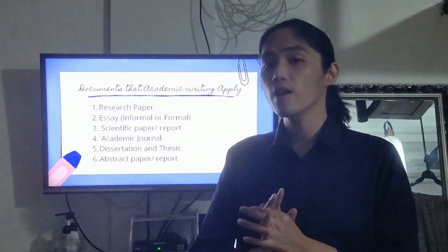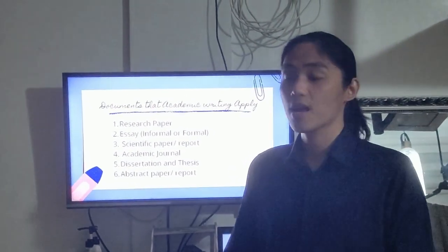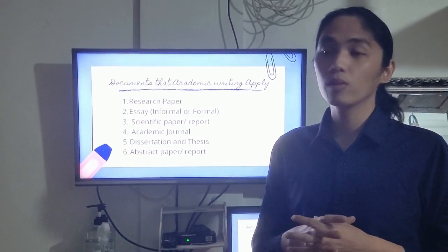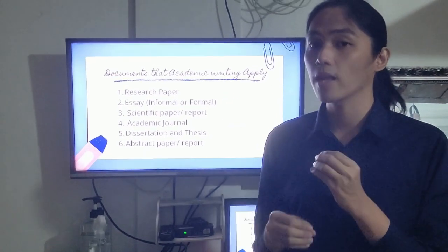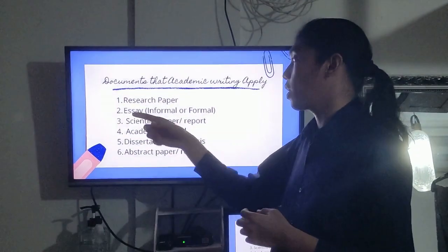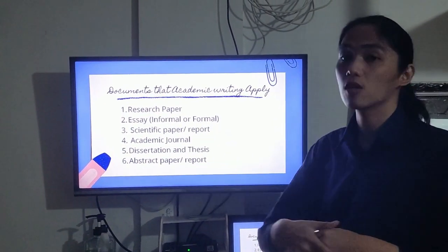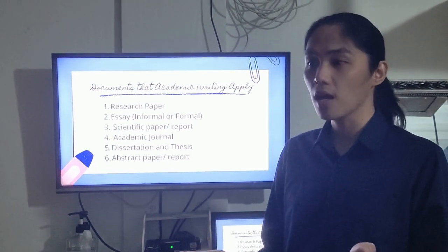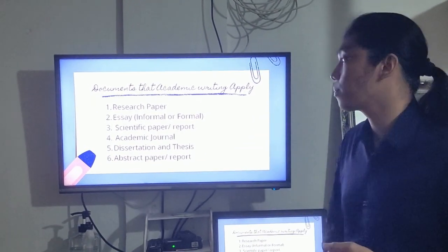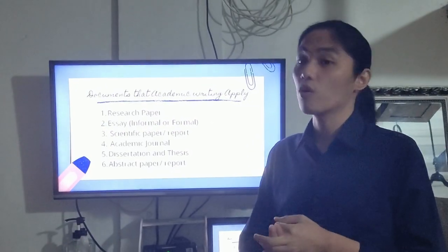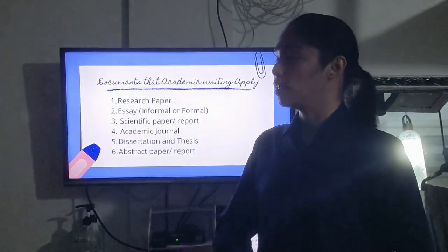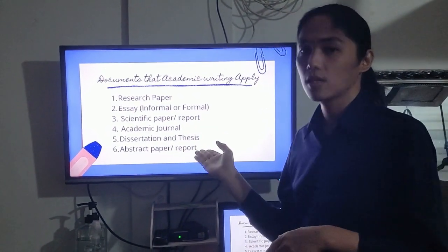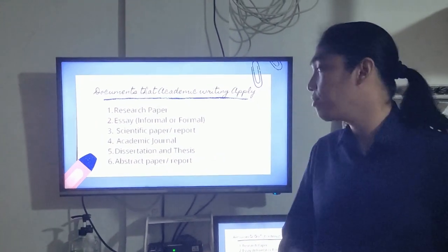There are different documents applied in academic writing. Number one is the research paper. Number two is the essay, which has informal and formal formats. Number three is the scientific paper or scientific report. Number four is the academic journal. Number five is the dissertation and thesis format — a deeper format of research. Number six is the abstract paper or report.